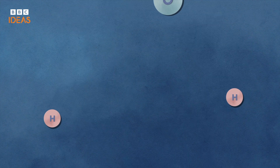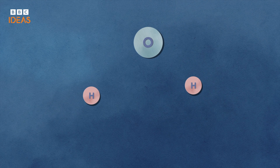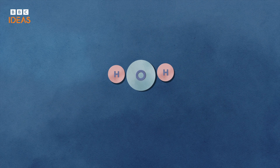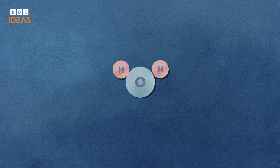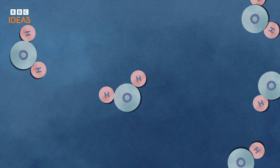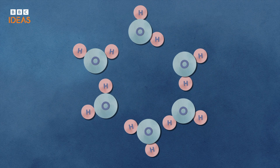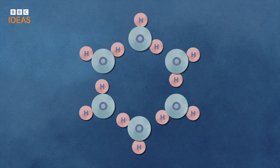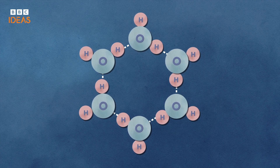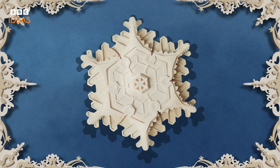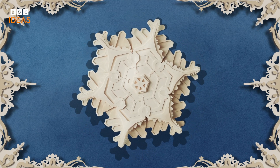What Kepler didn't know at the time is that each molecule of water, or H2O, is made up of two hydrogen atoms and one oxygen atom. As the water molecules cluster together when they freeze, the angle between the hydrogen atoms is always approximately 105 degrees. And that gives us the six sides. At its heart, a snowflake is always a hexagon.